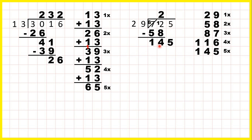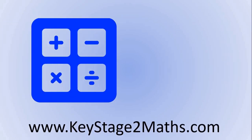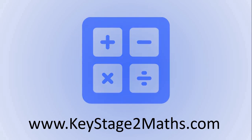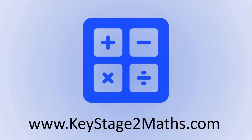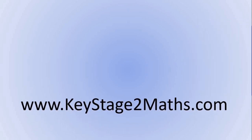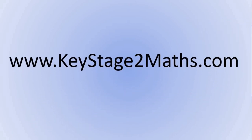We bring down the 5, so we have 145 divided by 29. We can see that that's exactly 5 times, so 5 is the last digit of our answer — giving us 25. Thank you so much for watching, I really hope that was helpful. If you're a teacher or a parent, please subscribe or go to keystage2maths.com to download resources for this lesson and many more. That's all for now, I'll see you in the next video.